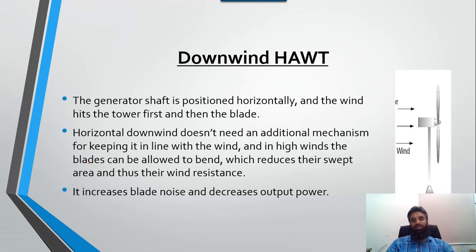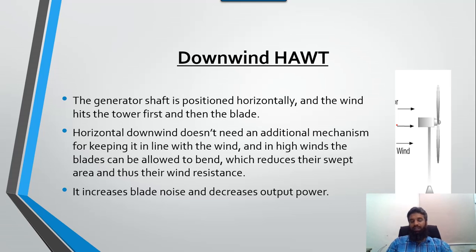The downwind horizontal axis wind turbine has the direction of the wind opposite to the direction of the blade, so the wind passes the tower first and then goes to the blade. It does not require an additional yaw mechanism like the upwind type. In high winds, the blade can be allowed to bend, which reduces the swept area and wind resistance, but it increases blade noise and decreases input power.